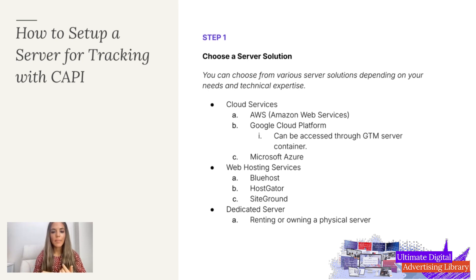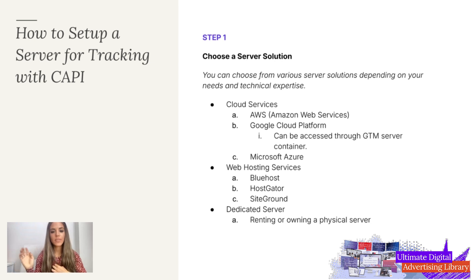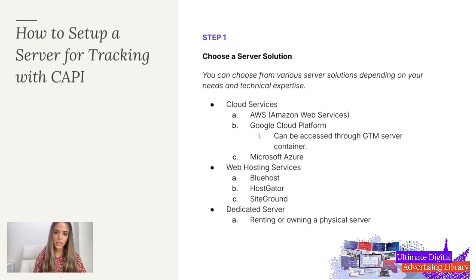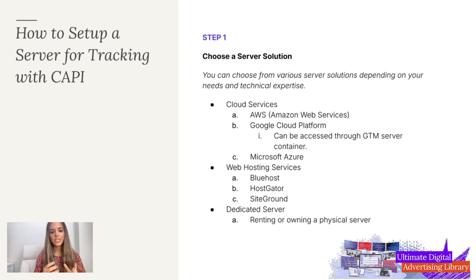For cloud services, there's Amazon Web Services, Google Cloud Platform — which can be accessed through the GTM server container and Google Tag Manager, which is an awesome option — Microsoft Azure, different web hosting services like Bluehost, HostGator, and SiteGrounds, and then there's a dedicated server where you can rent or own a physical server. We typically use Google Cloud Platform, setting it up through Google Tag Manager, so that we have that Conversions API starting to record.